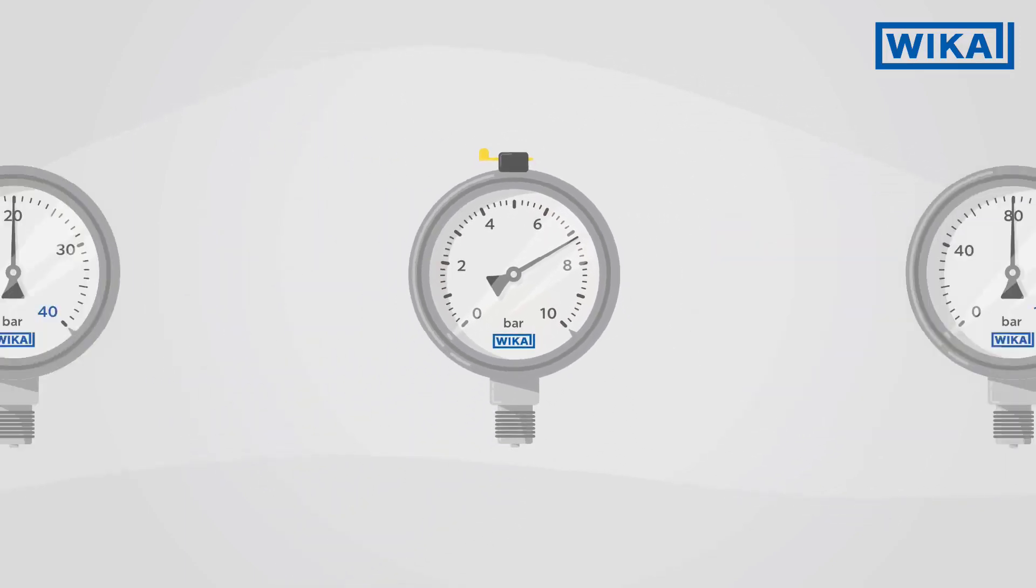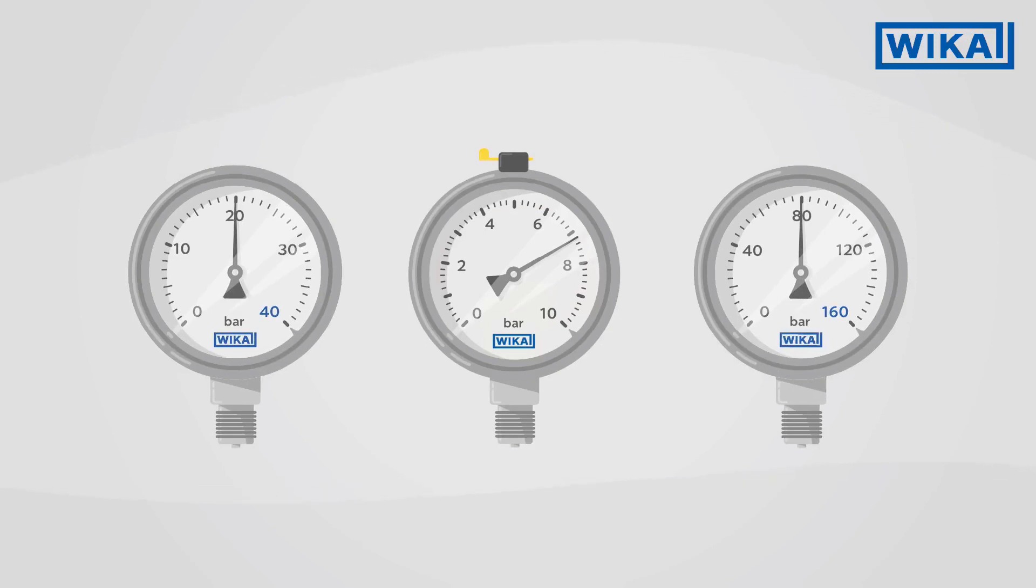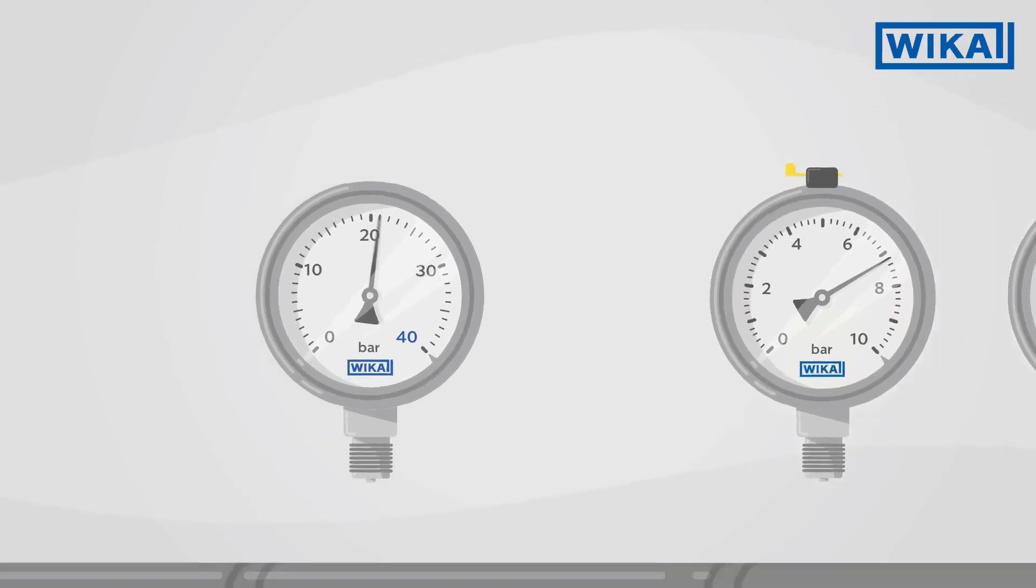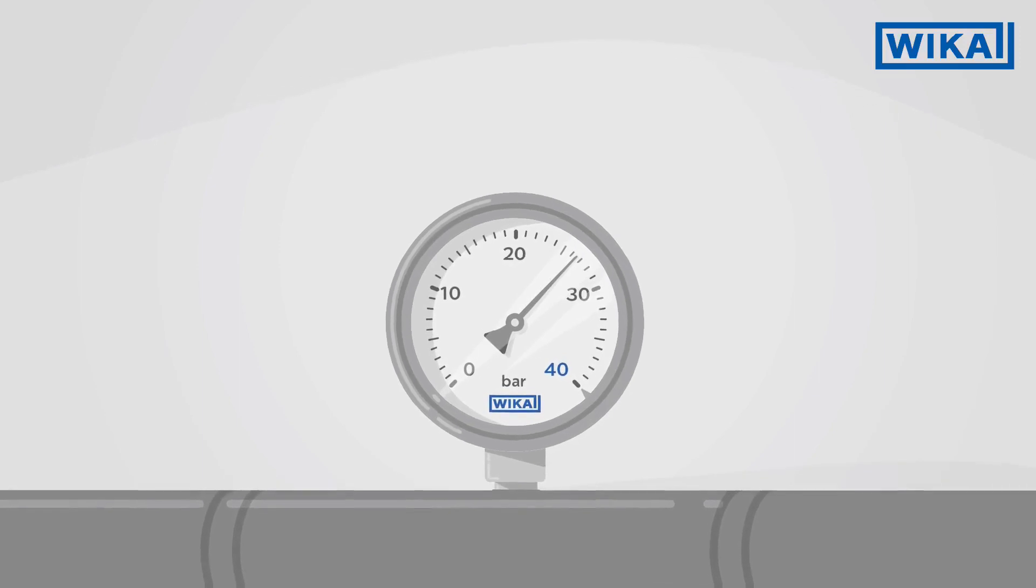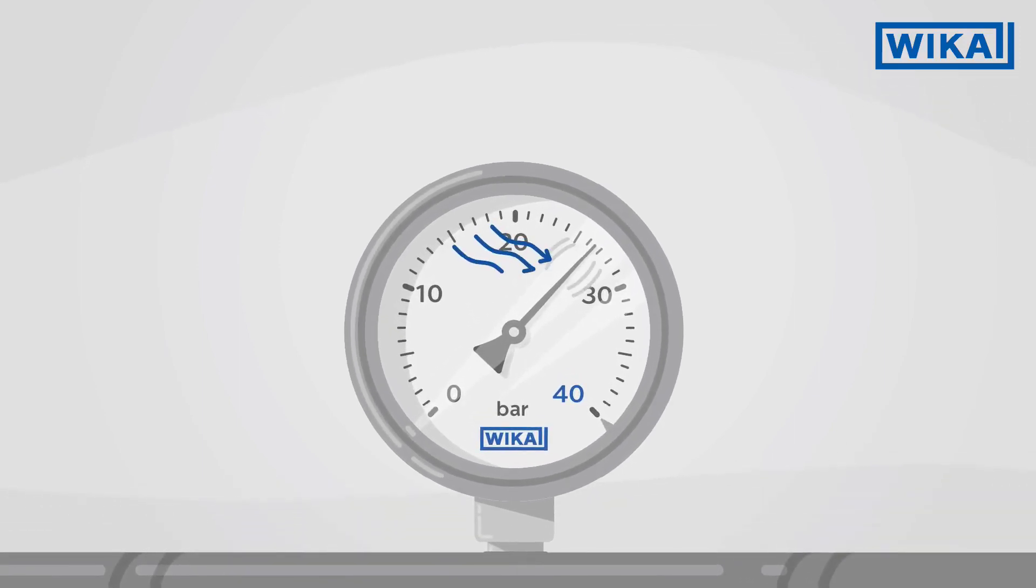However, not all WIKA pressure gauges have such a vent valve with this yellow lever. It is not needed for pressure gauges with pressure ranges over 16 bar. Here the temperature error can be ignored since it is so small in relation to the pressure range that the instrument will still operate within its specified class accuracy.